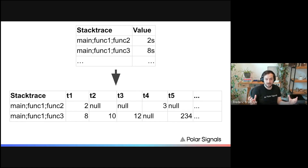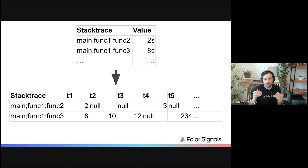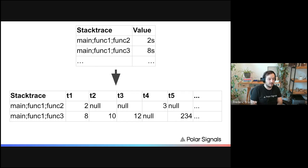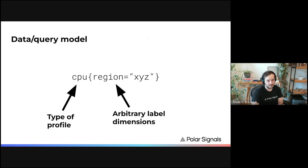If we think of this as time series data and threw it into Prometheus, the problem is that stack traces are very contrary to time series. Time series tend to be long-lived, but stack traces appear almost randomly — it depends on whether a user is doing the interaction that causes that stack trace to be executed. Profilers are sampling profilers; we only look at the stack trace maybe a hundred times per second. So there are many reasons why stack traces may appear and disappear over time. Classic Prometheus storage fundamentally can't work here.